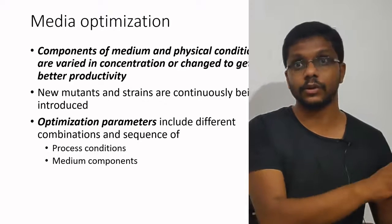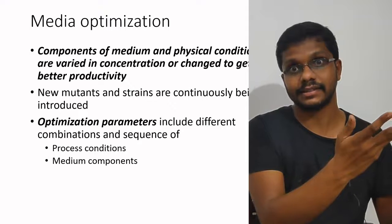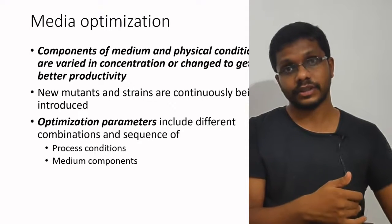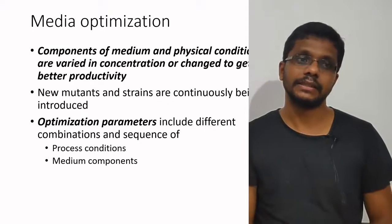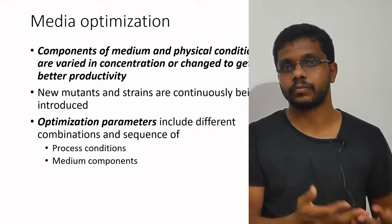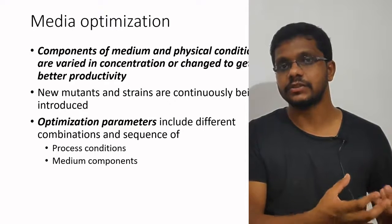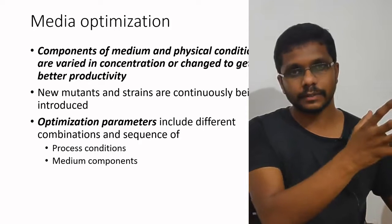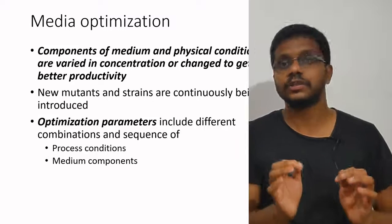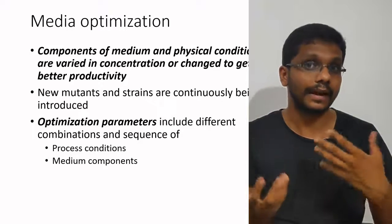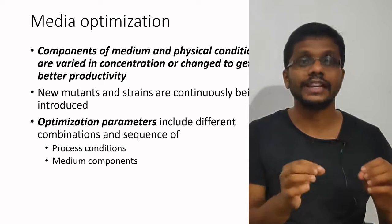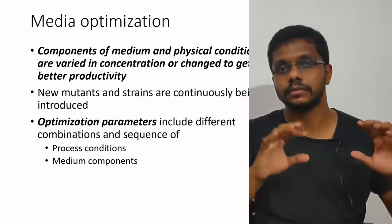The pH may show a similar pattern. In the initial phase the pH may be acidic, and during the fermentation it may go to neutral or basic pH. So our question is: what is the best pH to be maintained for better productivity? What is the best temperature for better productivity? By manipulating components of the medium and physical conditions, we want to get better productivity or the best yield so that the industry will become more economical. The components and physical conditions are varied in concentration or changed to get better productivity — the basic aim is to get more yield.